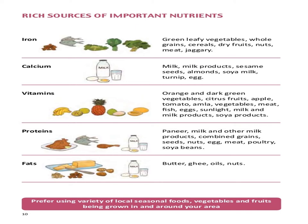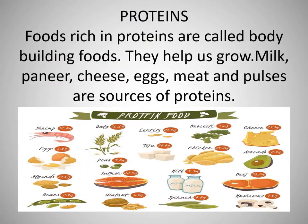Proteins are also known as protective or body-building foods because they help us grow strong. Proteins are body-building foods — they help us grow and keep ourselves healthy. That is why growing children need more proteins compared to adults. The common sources of proteins are milk, paneer, cheese, pulses, and cereals. Non-vegetarians can also have eggs and meat as a good source of proteins.